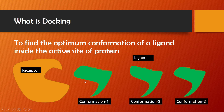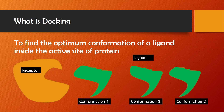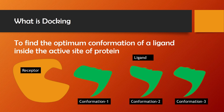It will find which conformation fits well in the active site. For example, conformation one fits very well in the active site. Then we check conformation two — it doesn't fit well. Then we check conformation three — it doesn't fit well either. So MOE software generates conformations of our ligand, places each one by one in the active site, and finds which conformation fits best. This whole process is called docking.